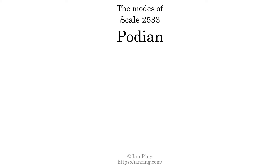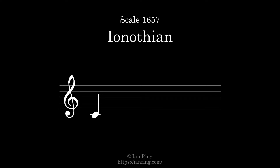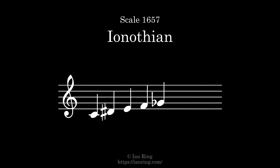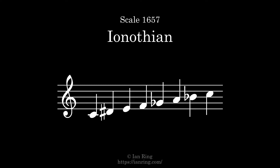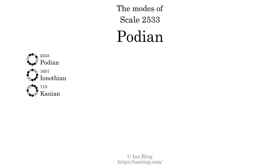This scale has seven modes. The first mode is itself. The second mode is scale 1657, also known as Ironothian. It sounds like this. The third mode is scale 719, also known as Canyon. It sounds like this.